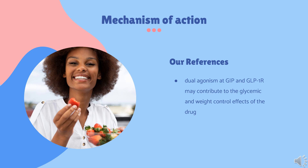Studies demonstrated that co-administration of GIP and a GLP-1R agonist more significantly increased insulin response and suppressed glucagon secretion compared to separate administration of either hormone alone. Tirzepatide binds to GIP and GLP-1R with high affinity. In vitro, tirzepatide has a comparable GIP receptor binding affinity to native GIP and 5 times lower GLP-1R affinity than that of native GLP-1. However, the role of GIP-R agonism in the drug's mechanism of action requires further investigation, as evidence from preclinical and clinical studies remains conflicting.